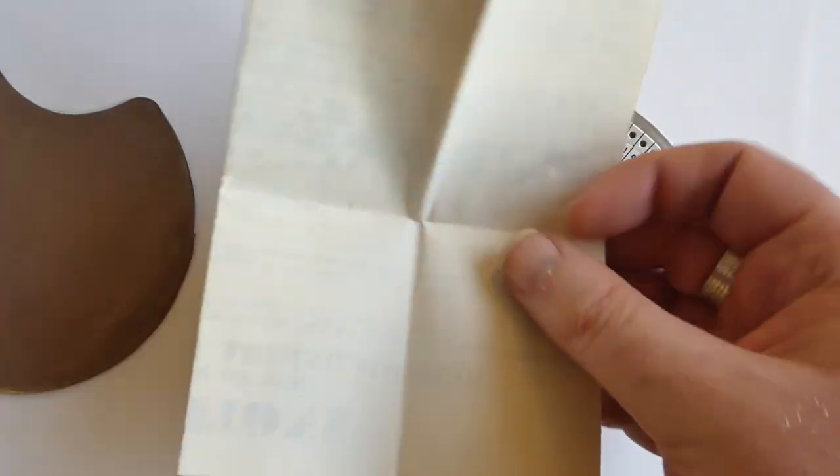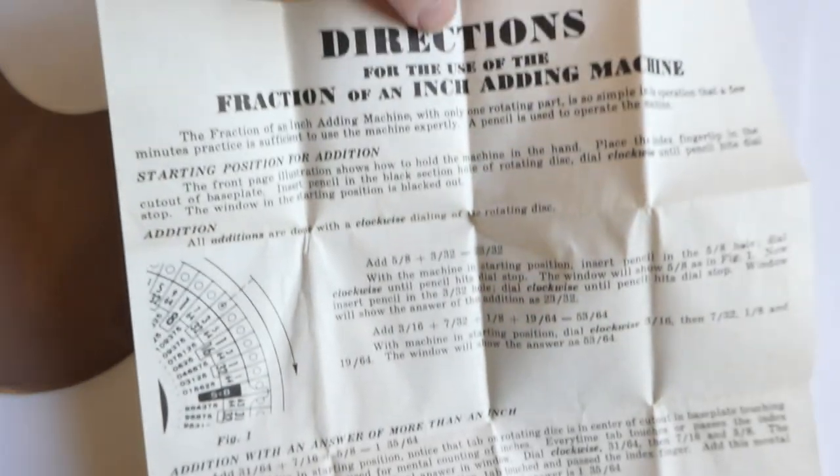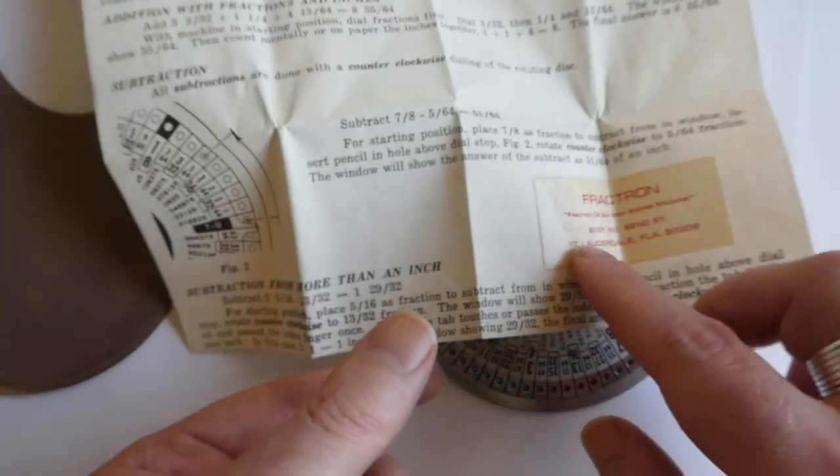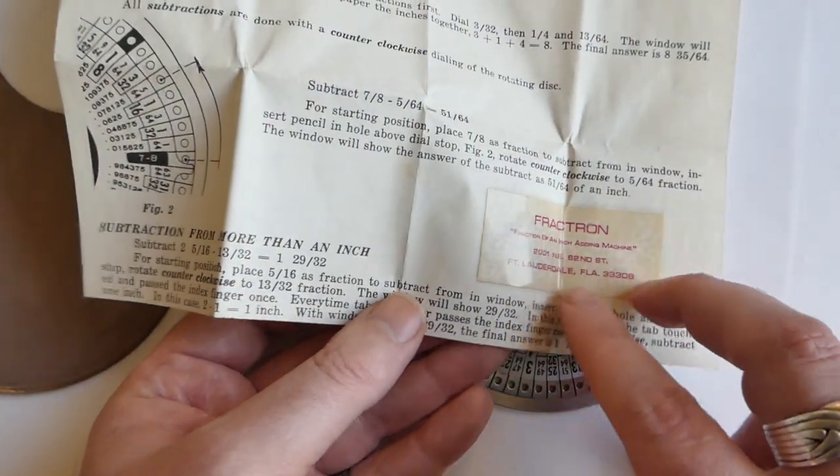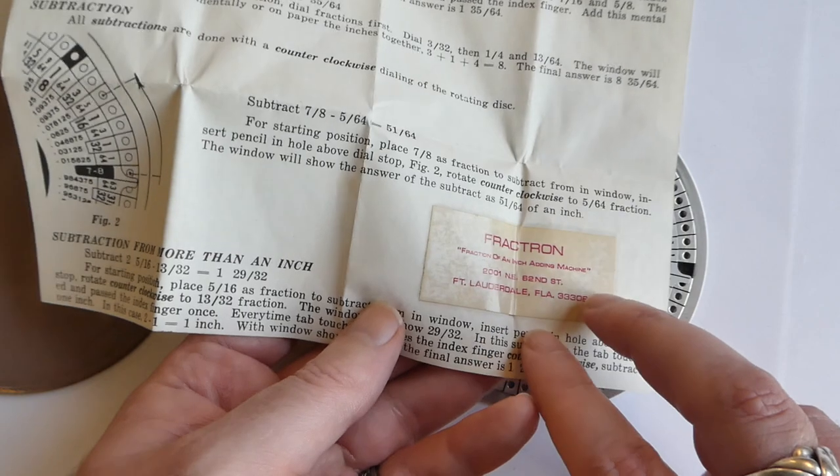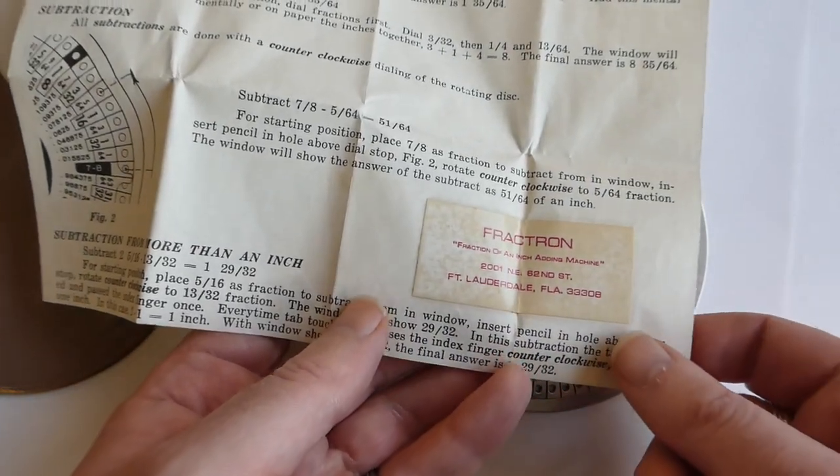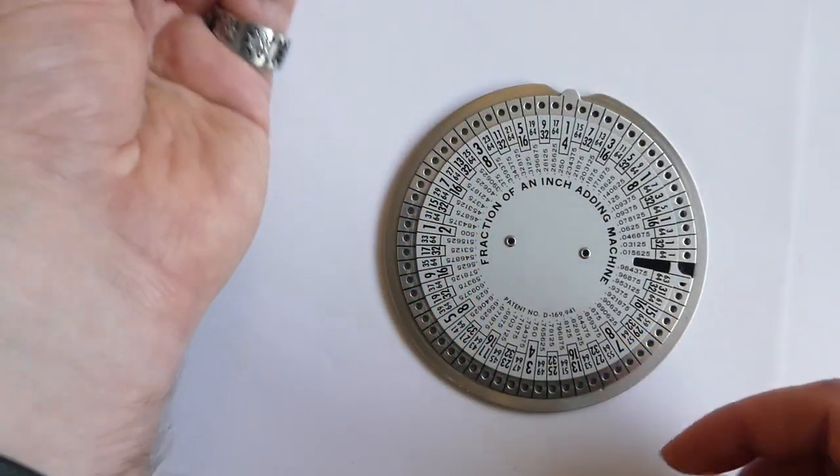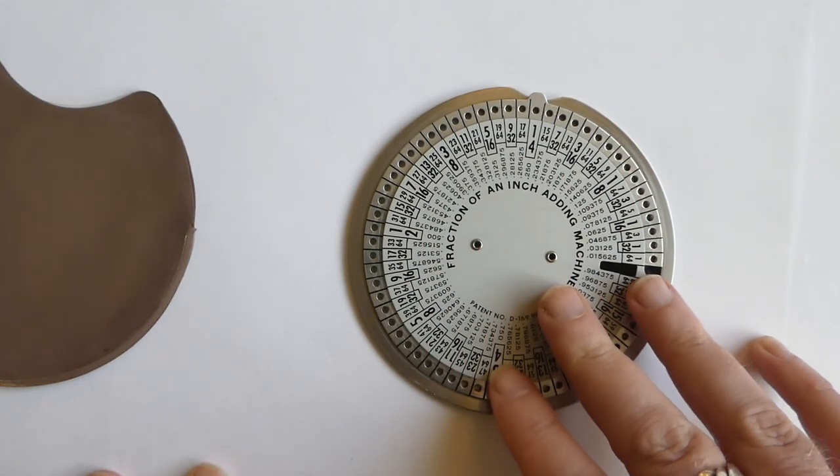It comes with an instruction leaflet or directions. The interesting thing is it has a sticker down the bottom that says Fractron. So this machine was now called the Fractron, or maybe that was just the company that was making them at this point. So this one is probably from either the late 1950s or 1960s.